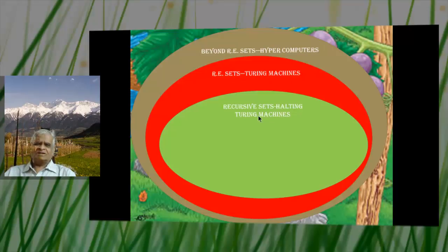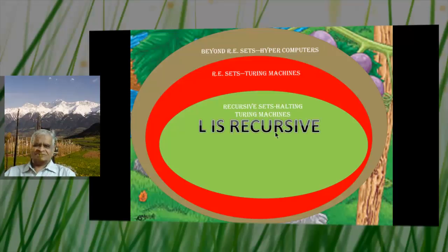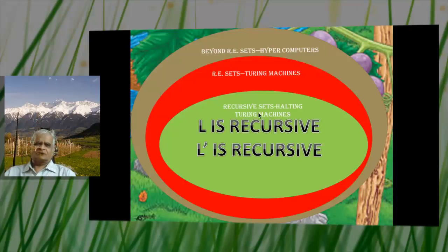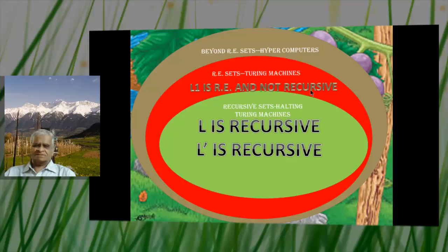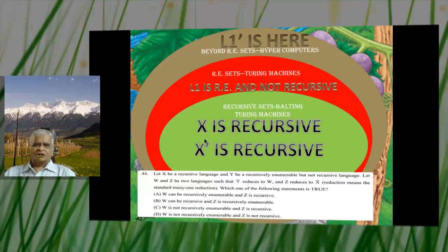Turing machines that always halt decide the recursive sets. Suppose L is a recursive set — then L complement is also recursive, because we interchange accepting and non-accepting states. If L1 is RE and not recursive, then L1 complement lies outside the RE region entirely.